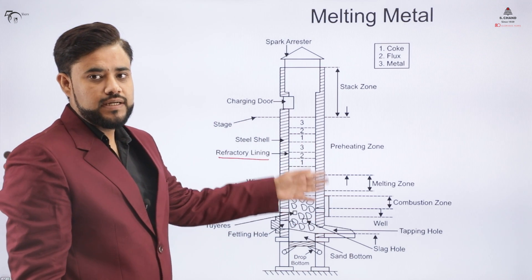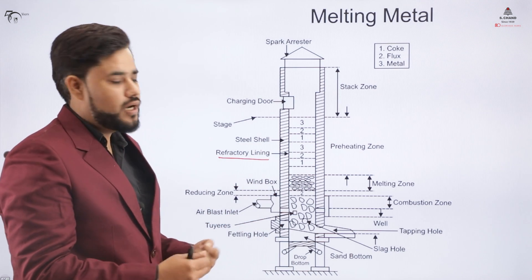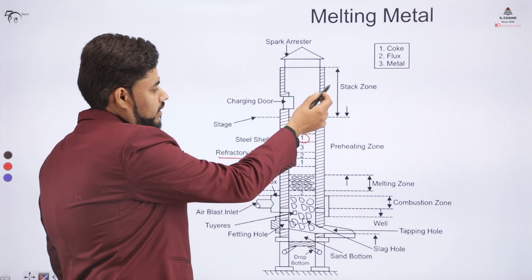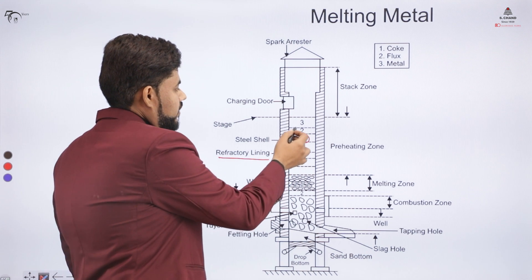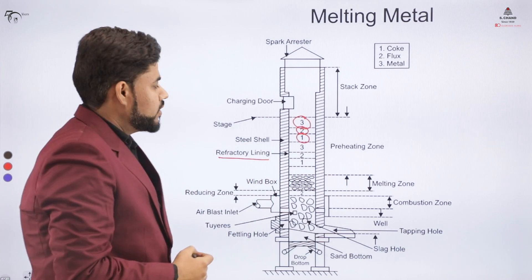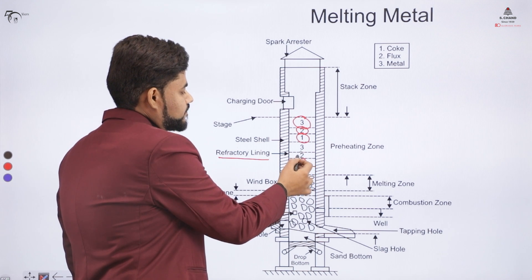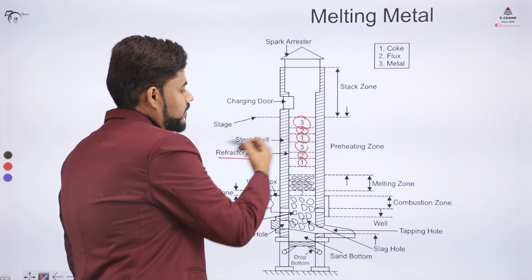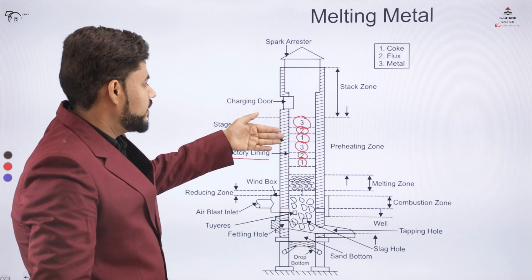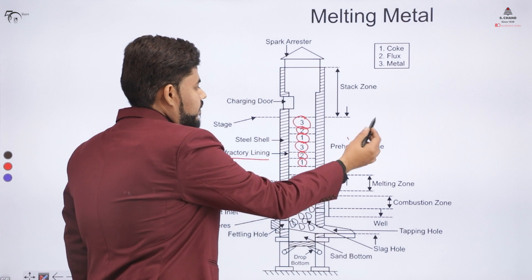The refractory lining is a kind of brick lining on the surface that is used to prevent heat from escaping. There is a layer of metal that needs to be melted; above that metal we place a flux layer and a layer of coke. So we have a metal layer, a flux layer, and a coke layer. This region with these three layers is called the preheating zone.